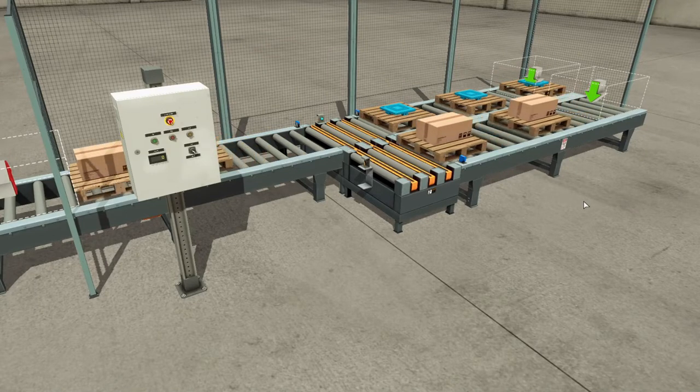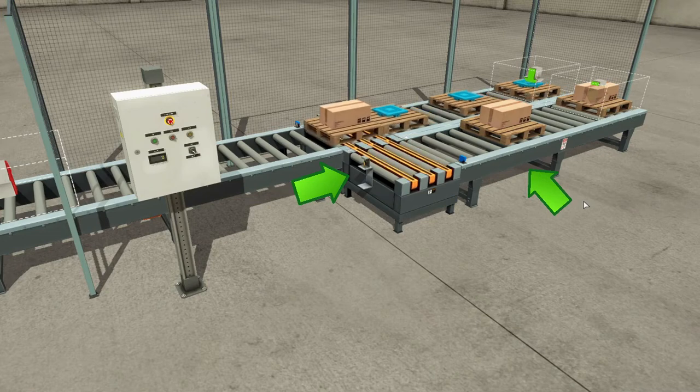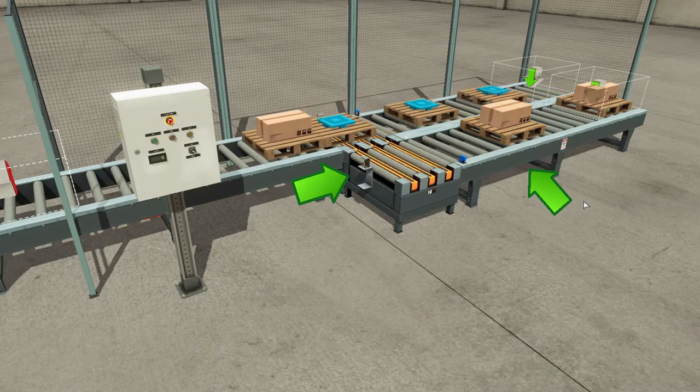When the box reaches the capacitive sensor in the chain transfer, conveyor 2 will stop. When it leaves the chain transfer, conveyor 2 will run again.